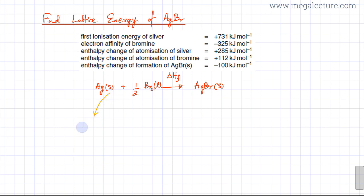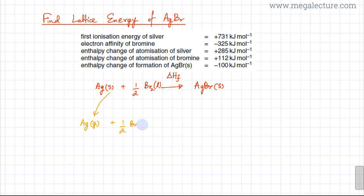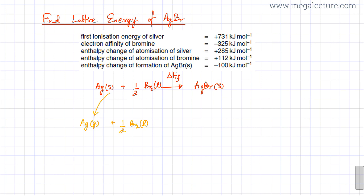Let's start creating this other path by atomizing silver first. I have Ag solid and I'm going to convert silver solid metal into silver gaseous atoms, while bromine remains as BR2 liquid. This is where the metallic bonds in silver are broken and all the silver atoms are changed into gaseous state. This arrow represents the enthalpy change of atomization of silver: delta H atomization of Ag.